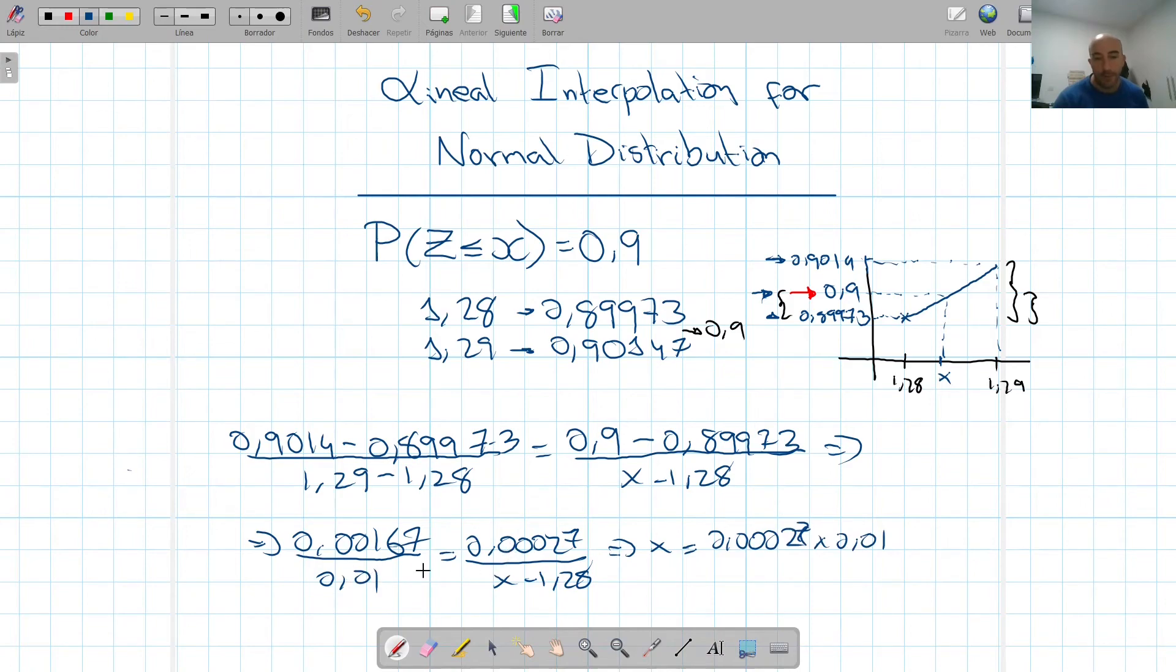And so if we put x as the subject of the equation, we have 0.0027 multiplied by 0.01, that goes from bottom to the top, then we send this one to the denominator, and then plus 1.28, which we're subtracting on the other side. So if we do that, we get, I'm going to leave it at four decimal places, so that's more or less that. So we obtain that our x is more or less 1.2816, which as you see is between those two numbers.